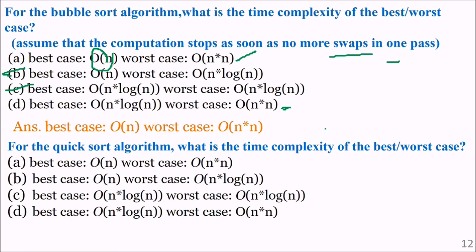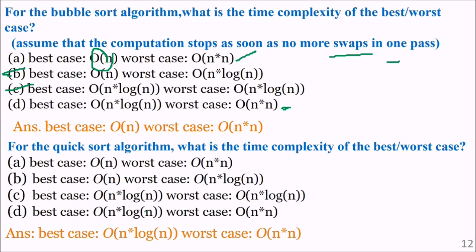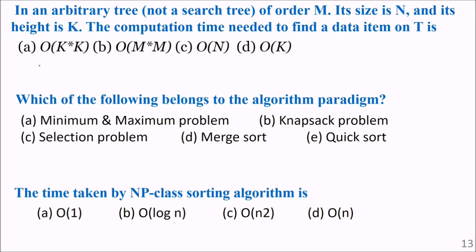For the quicksort algorithm, what is the time complexity of the best and worst case? The best case is order of n log n and the worst case is order of n squared. That is why quicksort is a very good algorithm — it normally gives comparable results to merge sort.